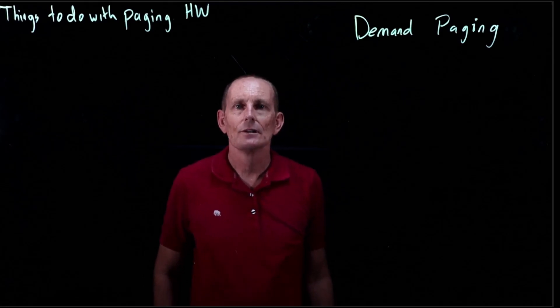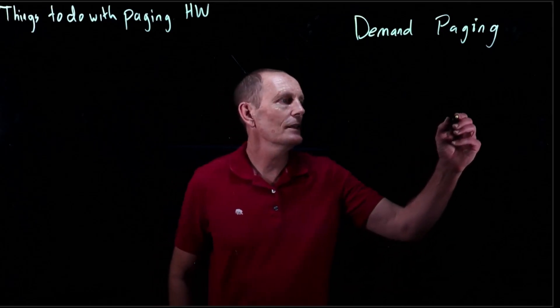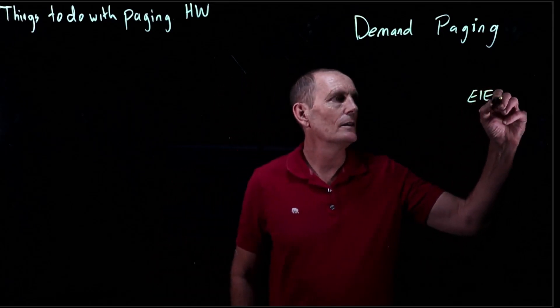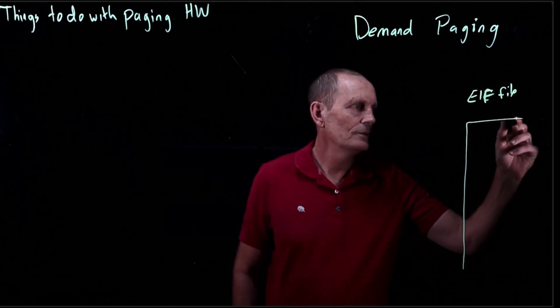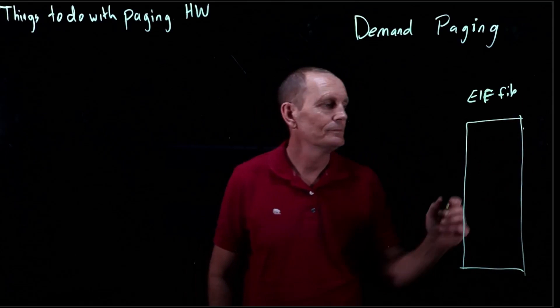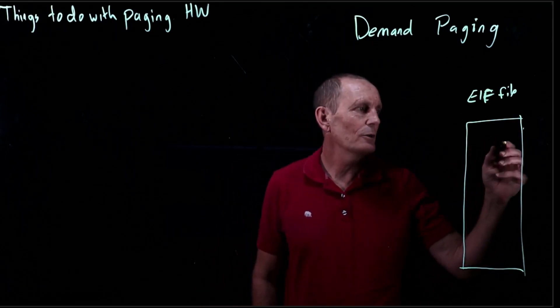Yet another optimization using paging hardware is demand paging. Here's the idea: let's say you've got an ELF file. So your ELF file has a bunch of code in it. Let's say this is the text section, which contains all the code.